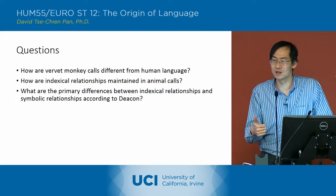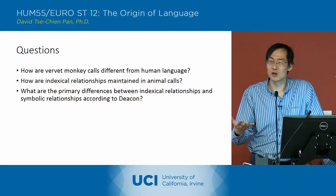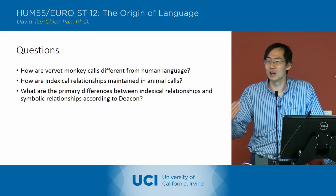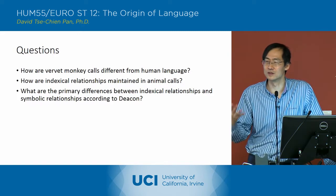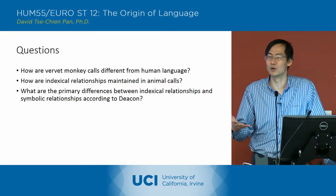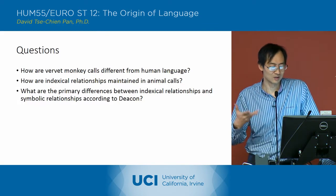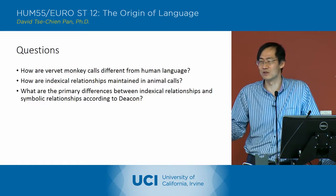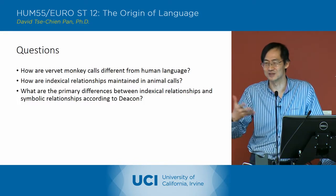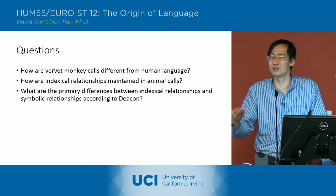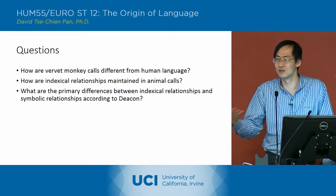Another difference is that because of that direct correlation, the vervet monkey calls will lose their meaning if the physical presence of the referent disappears. Whereas with human signs, that's not the case. 'Vervet monkey' still means vervet monkey even if we've never seen a vervet monkey — all sorts of different things we've never seen — but the signs still retain their meaning. Whereas with vervet monkey calls, if they stop seeing the eagle, that call will go away.